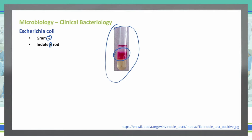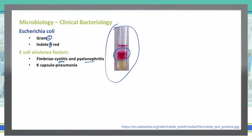What causes the virulence of E. coli? First and foremost, the fimbriae can lead to cystitis and pyelonephritis — that allows the E. coli to actually climb up the urinary tract and infect the bladder upwards to the kidneys. It has a K capsule that can give us a possibility of causing pneumonia. That K capsule also can lead to neonatal meningitis. And then it has a lipopolysaccharide endotoxin, and that can give us septic shock with E. coli.